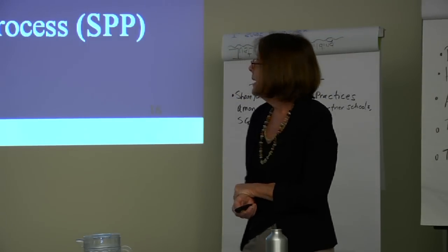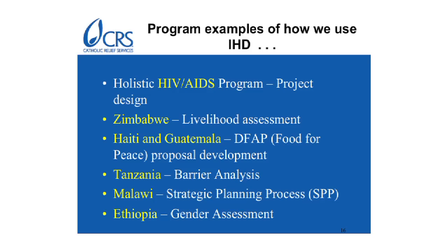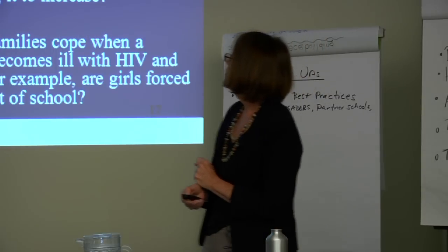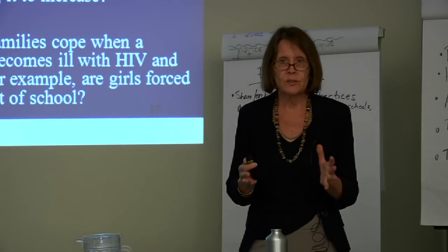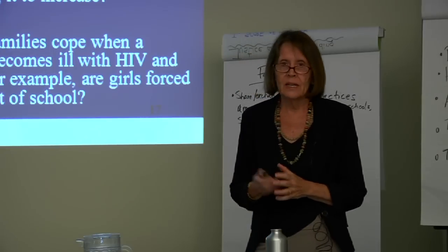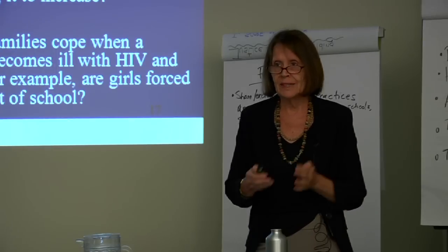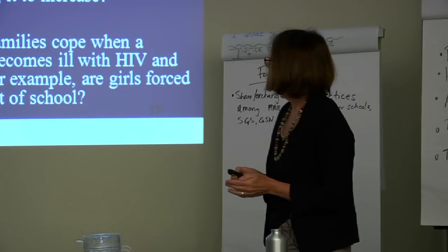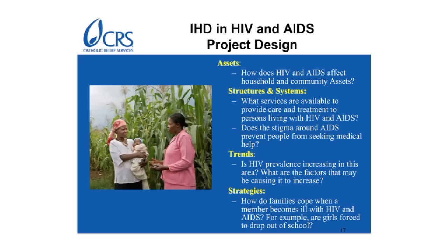Just to take a quick look at a few examples of how we've looked at it — these are examples I've been involved in in the last six months. The first one is really, if we were going to take a sector such as our work in HIV and AIDS, what kinds of things would we ask, and how would the IHD framework link to that work? We'd ask questions such as these about assets: How does HIV and AIDS affect our households and our communities' assets, their capabilities, the resources they have to do this work?